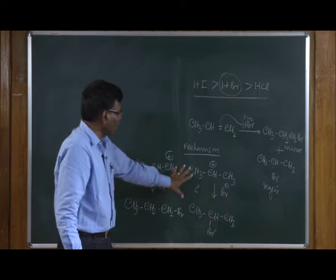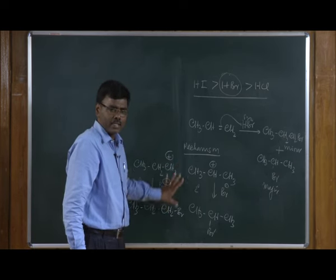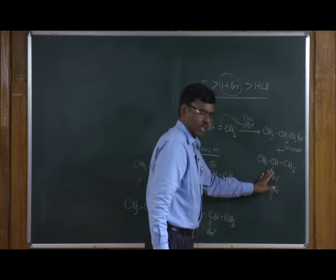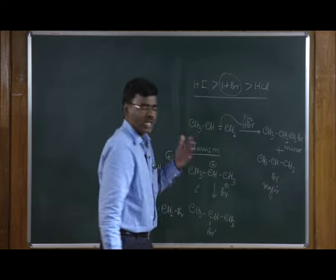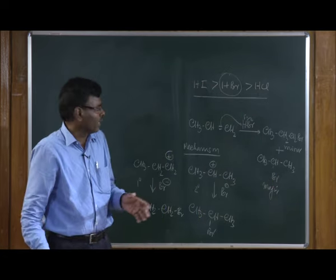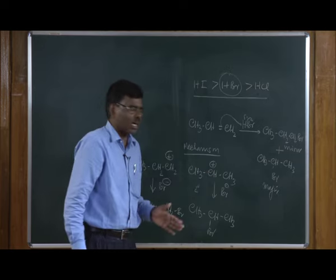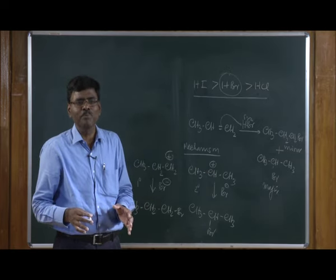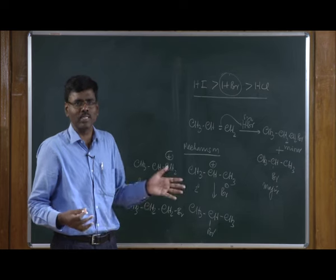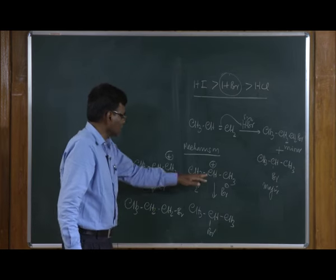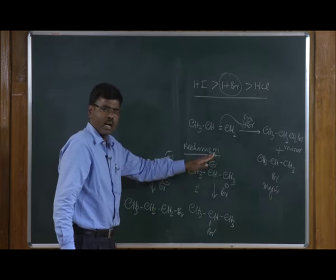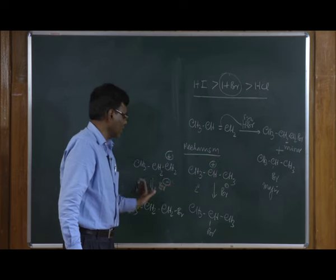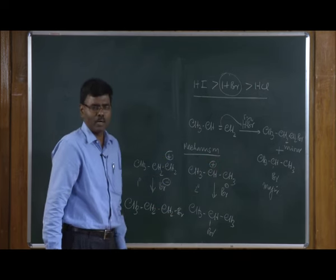The formation of the secondary carbocation is predominant, and therefore we get the secondary product as the major product. This is because, as we will study in higher class, more substituted carbocations — tertiary or secondary — are more stabilized by hyperconjugation as well as the inductive effect. Therefore the concentration of this carbocation is higher, and we get it as the major compound.